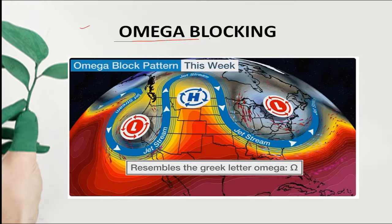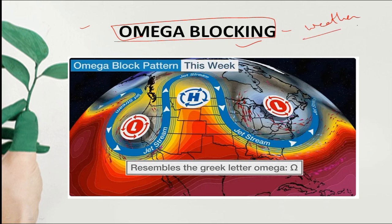Today's current affairs series topic is Omega Blocking. Omega Blocking has been found in different places causing weather disturbances, flood incidents, and drought incidents.